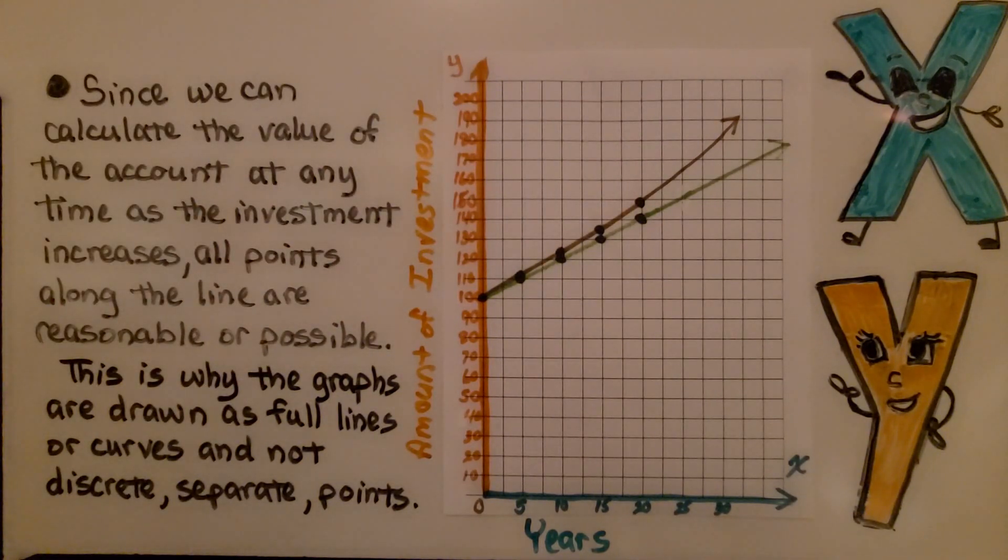Linear means straight line. Lines are straight. If the data lie on a line, then the relationship is linear. If the data lie on a curve, the relationship is non-linear.